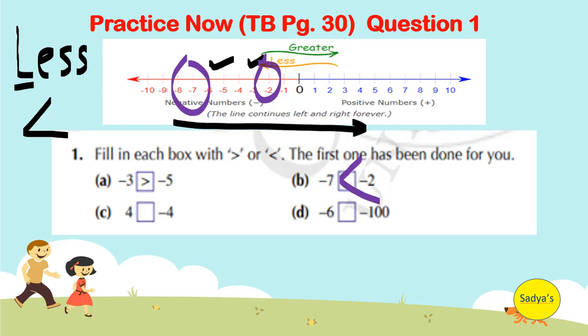Part number C. 4 and minus 4. Minus 4 is here and 4 is here. Since minus 4 comes first, it is smaller. Hence, 4 is greater than minus 4.